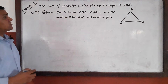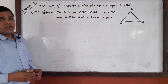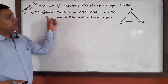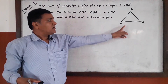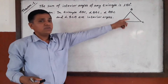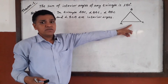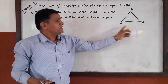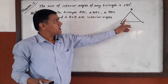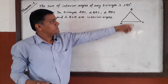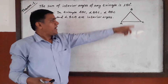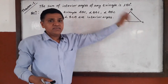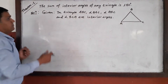Dear students, I want to make it clear that we have to write the given according to the figure. Here, triangle ABC is drawn, which has three interior angles: angle BAC (that is angle A), angle ABC (that is angle B), and angle BCA (that is angle C). This is the given.